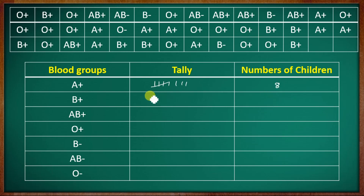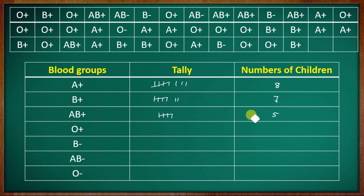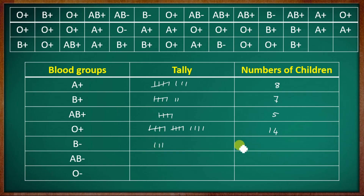If you count B positive, it is 5. So B positive has 5 children. For O positive, counting gives 5 plus 5 plus 4, which is 14. B negative is 3. A negative is 2. O negative is 1.